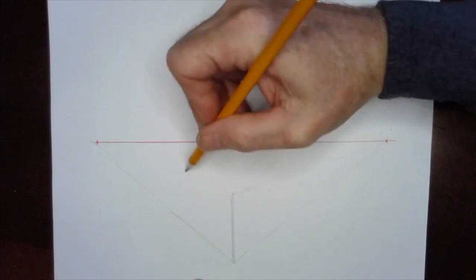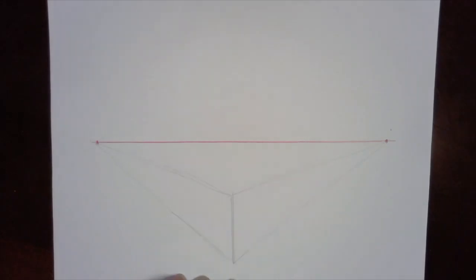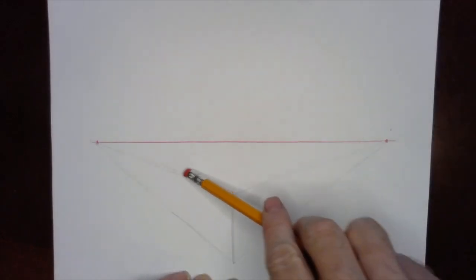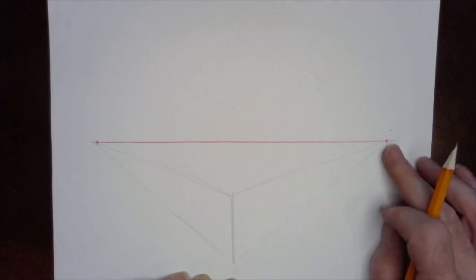One, two. It's kind of hard without moving around the paper. So there's just a vertical going back to my vanishing points.